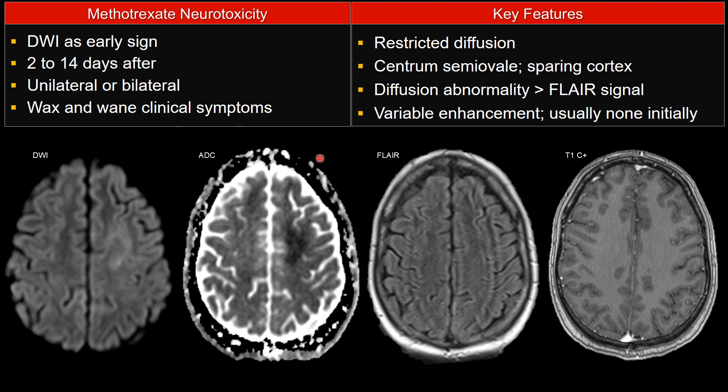The timeline typically is anywhere between 2 days to 14 days — sometimes a little bit earlier, sometimes much later. Symptoms or findings can occur either unilaterally or bilaterally. In this case, you have unilateral involvement.